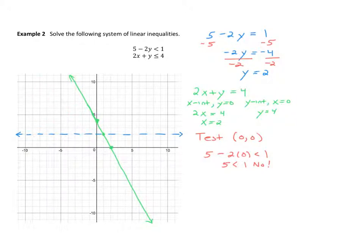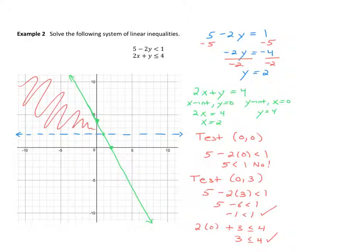So if I test zero three, it has a zero in it, which is nice. Let's see what happens this time. We get five minus two times three. Is that less than one? That's five minus six. That's true. Negative one is less than one. All right, great. Now let's plug this into two x plus y is less than or equal to four. So you get two times zero plus three. Is that less than or equal to four? That simplifies to three is less than or equal to four. That's true. All right, perfect. The point zero three, which was right here, worked. It means that all these points must work. I will shade in that region. That means my answer occurs in that one spot.